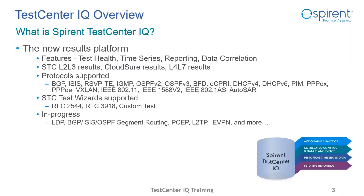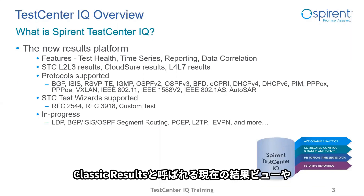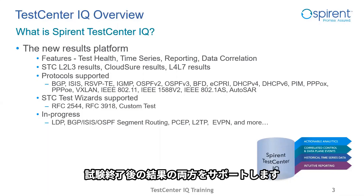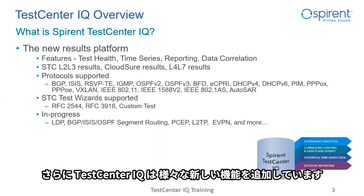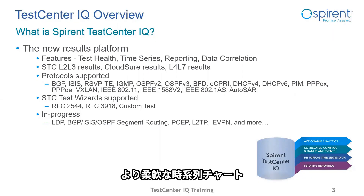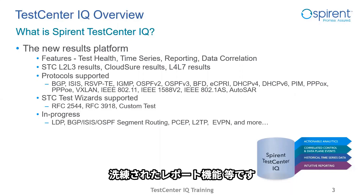Test Center IQ supports the storage of both live results and end-of-test result values, as well as management of test results. Unlike the current result views — now called classic results — Test Center IQ offers many other new features. A few of these are test health, which gives the user an easy-to-see high-level view of the test status; time series graphs of live data and events for correlation of results; improved reporting capabilities; and correlation of data plane and control plane statistics, including events.